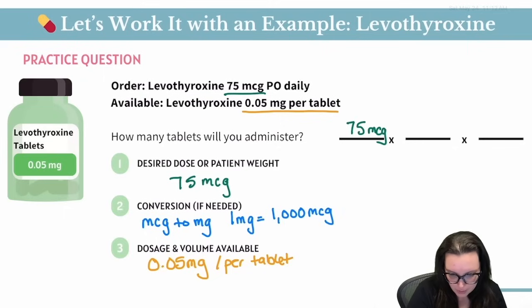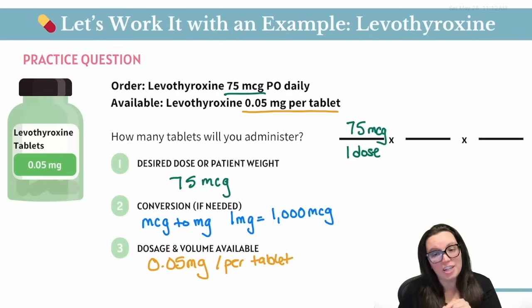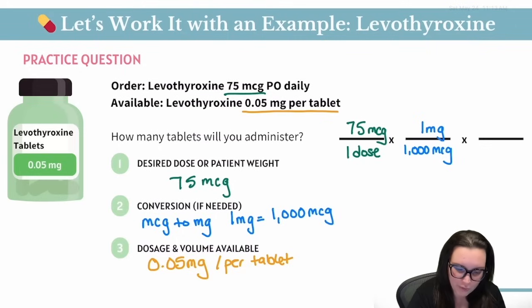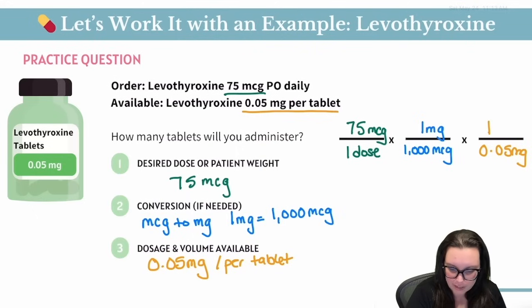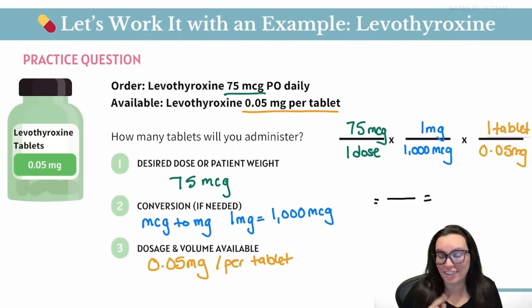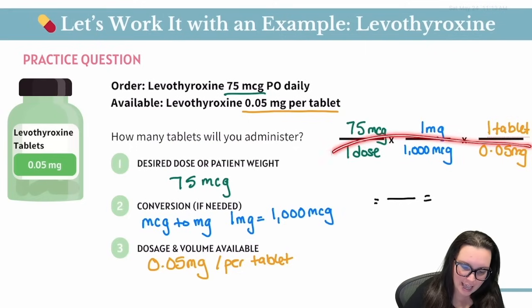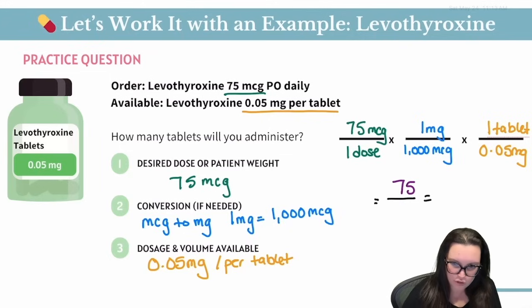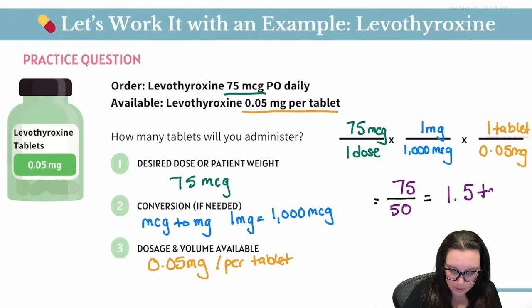Now we start plugging in. We've got 75 micrograms for our one dose. For our next fraction, we line up like units so they cancel — micrograms on the bottom, milligrams on the top. For fraction three, we put our dosage on the bottom: 0.05 milligrams, and our volume on the top: one tablet. Multiplying everything on top: 75 times 1 times 1 equals 75. On the bottom: 1 times 1000 times 0.05 equals 50. Then 75 divided by 50 gives us the correct answer of 1.5 tablets.